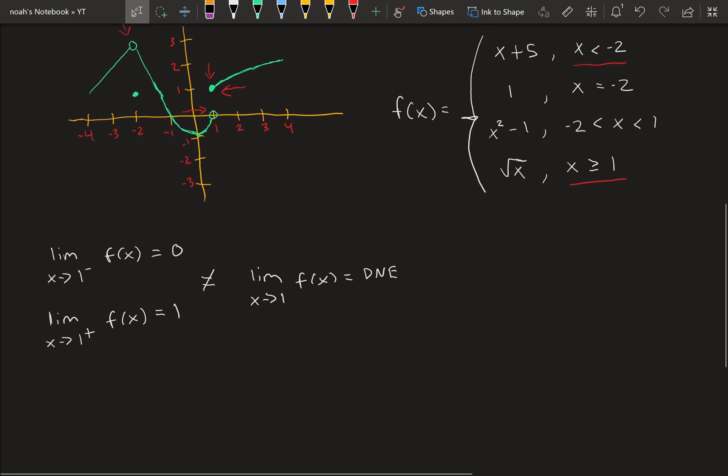And then let's try limit as x approaches minus 2 from the left, which would be right here. Approaching x equals minus 2 from the left, we see y is equal to 3. So this would be 3. And then limit as x approaches minus 2 from the right, we see would also be y equals 3.